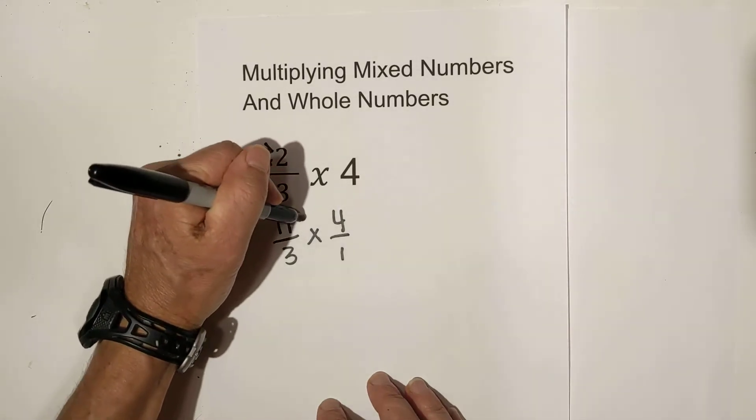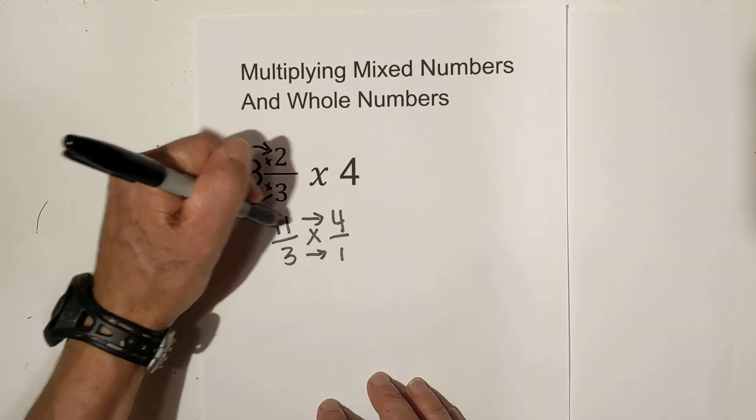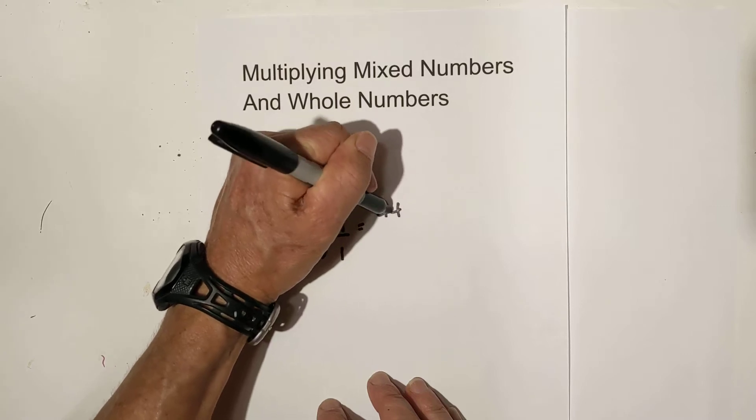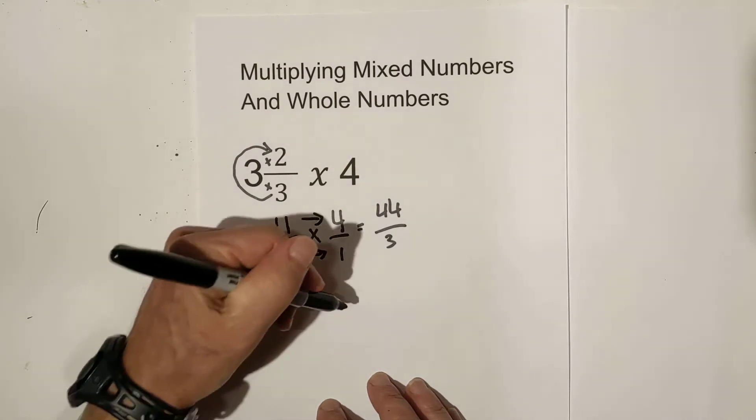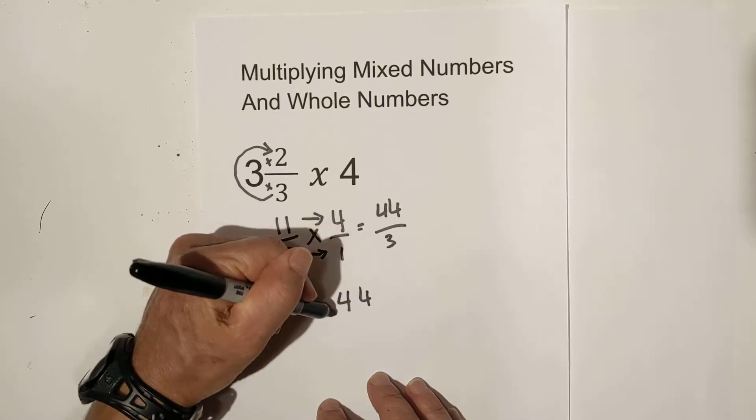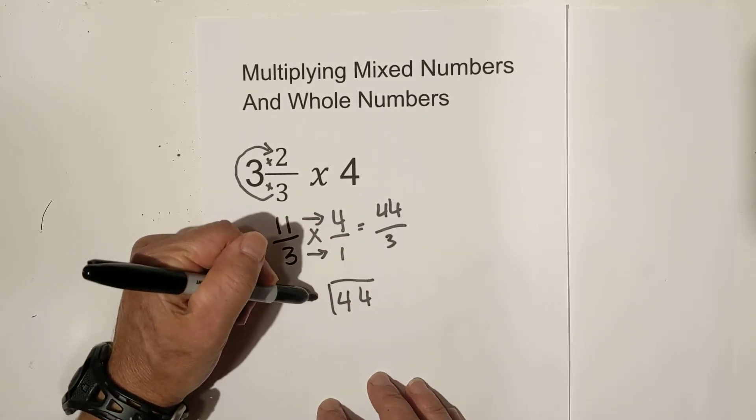Easy enough. Now multiply straight across, so that equals 44 over 3. Now we can convert it back into a mixed number.